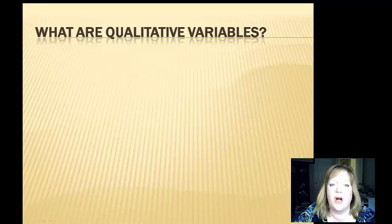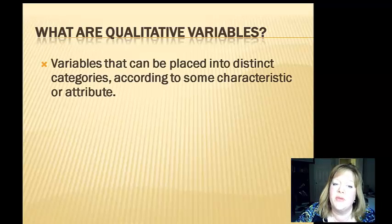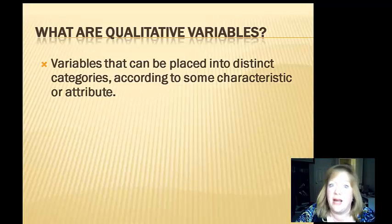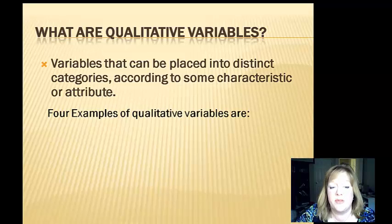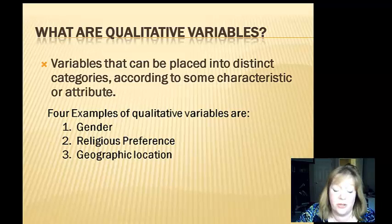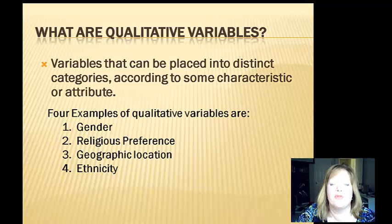The first thing we're going to talk about is qualitative variables. Ever meet somebody that has that special quality? That's what they're talking about — qualitative with an L. It is a variable that can be placed into distinct categories according to some characteristic or attribute. Examples include eye color, gender, or hair color. Four examples of qualitative variables are gender, religious preference — because you're Baptist, Catholic, or Jewish — geographic location, and ethnicity, if you're of Spanish descent or something like that.